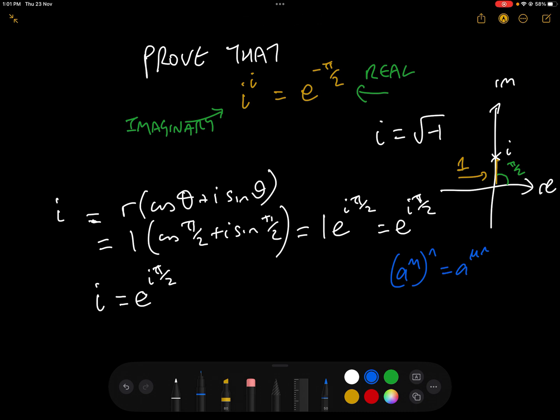Now using our laws of indices, we have that a to the power of m to the power of n equals a to the m n. So if we raise both sides of our equation by i, so i to the power of i equals e to the i pi over 2 to the power of i, i to the power of i equals e to the i squared pi over 2. And i squared is minus 1 because i is the square root of minus 1. So therefore i to the power of i equals e to the minus pi over 2. Voila.